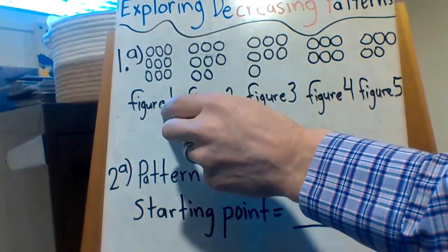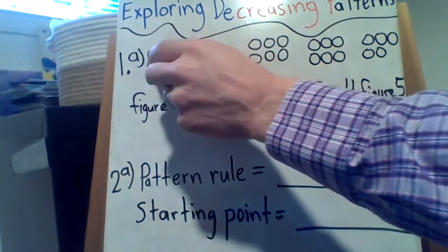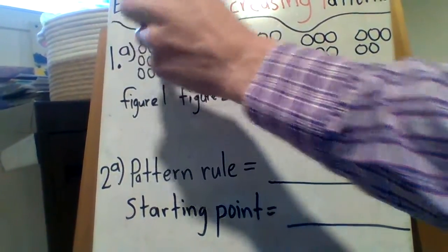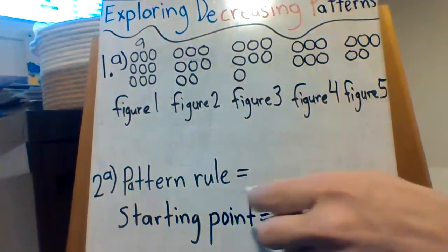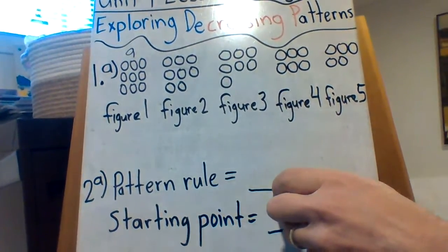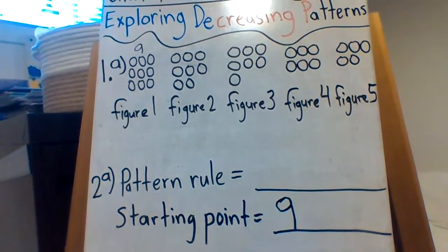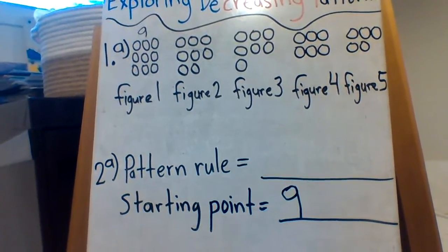How many are in figure 1? 3, 6, 9. I like to put that 9 just because I love to see the numbers. So that's my starting point. Okay, and you don't actually have to put this, it doesn't say you have to, but I'm putting it in there anyway. Because I know if I got the starting point and the pattern rule, I can do the rest easily.